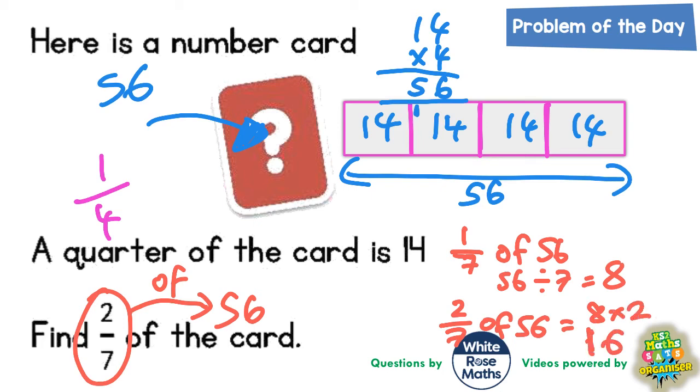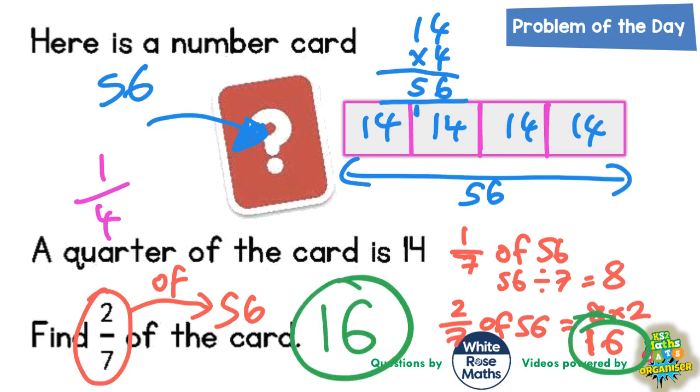And that's our final answer. 2 sevenths of the card is 2 sevenths of 56. And 2 sevenths of 56 is 16. Final answer, 16. But again this strategy of starting with a bar model and just seeing where that takes us can often help us out of a difficult situation.